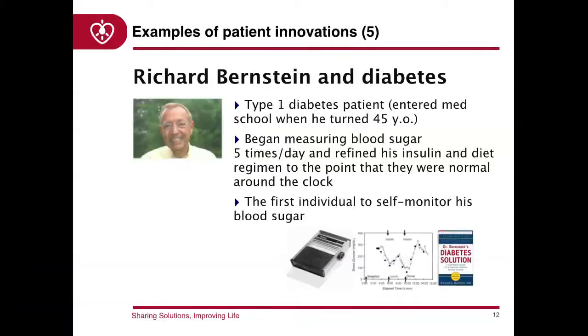We were finding all these examples — like Mr. Rich Bernstein, who discovered a solution for his own type 1 diabetes. He was so frustrated that nobody cared about his solution that at age 45 he decided to become a medical doctor. He entered med school and afterwards published a book called Dr. Bernstein's Diabetes Solution — insisting on using the title because he knows that's the reason people believe him.